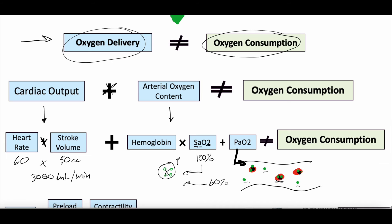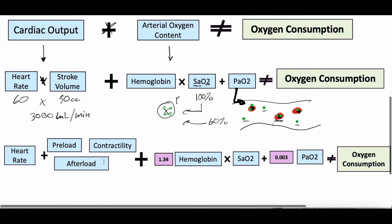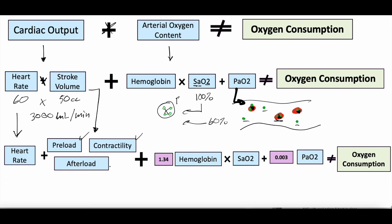That's what makes up oxygen delivery: cardiac output — as determined by heart rate and stroke volume — plus hemoglobin, oxygen saturation, and partial pressure of dissolved oxygen. We're almost to actionable bits. If you wanted to increase oxygen delivery, you'd need to increase stroke volume, for example. But how? You can break the equation down just a little bit further. Heart rate stays as is — we can measure and manipulate it with medications. Stroke volume, though, can be broken down into even smaller components.